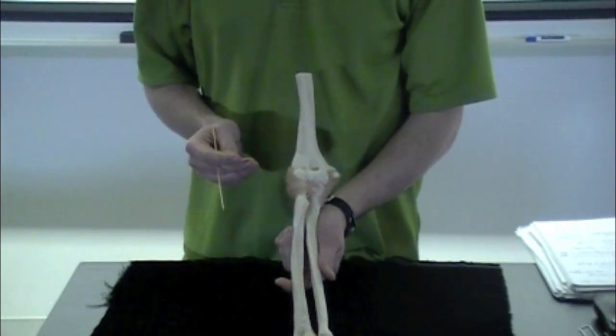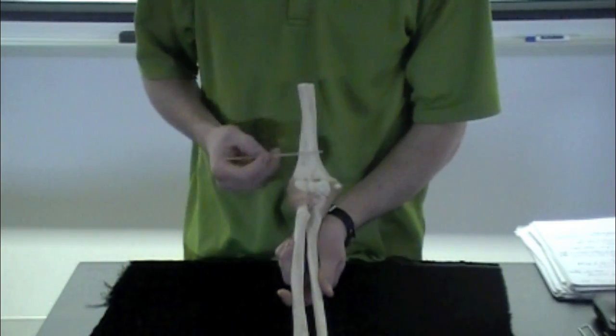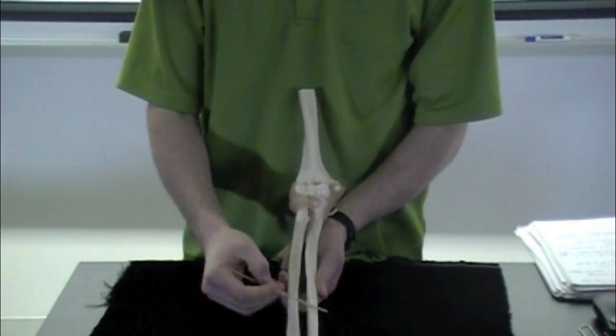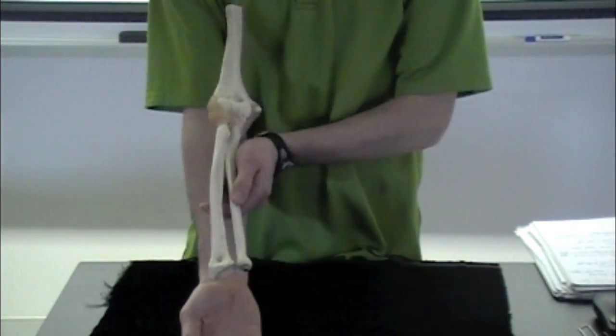We're going to go over the ligaments of the elbow here. Just get you oriented. We have your humerus, your radius, and your ulna. This is going to be of the right arm.